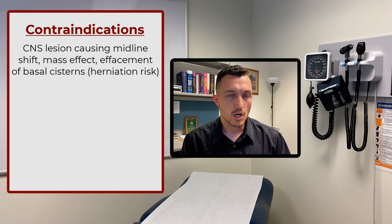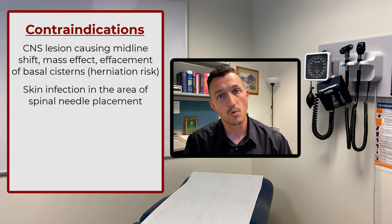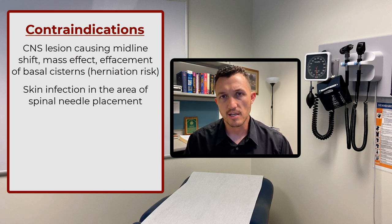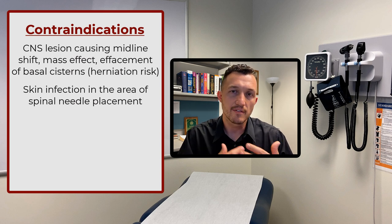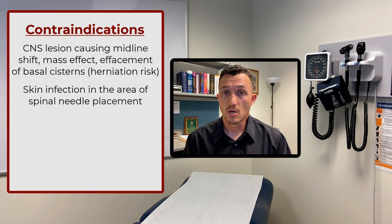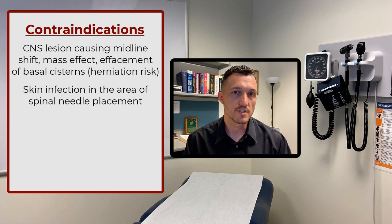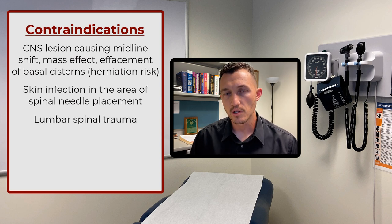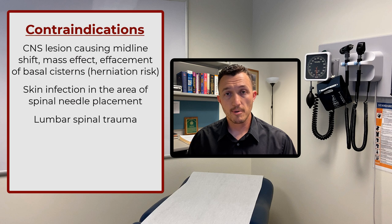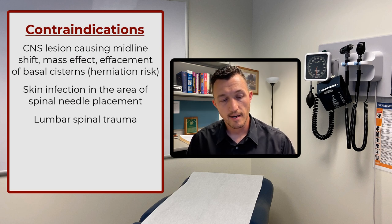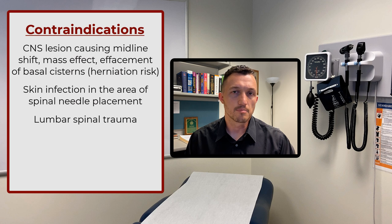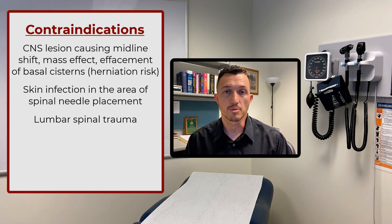Another important contraindication is any skin infection around the site where the lumbar puncture will be performed. If there's any cellulitis or abscess in the lumbar area, we should not perform a lumbar puncture there because it opens up the risk of a possible central nervous system infection — tracking that infectious pathogen down into the CNS, since the thecal sac in the lumbar area is part of the CNS and continuous with the brain through the CSF. Another important contraindication is any traumatic injury to the lumbar spinal column — whether acute trauma or past trauma with reconstructive surgery or scar tissue that would make the procedure much more complicated.